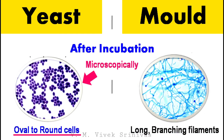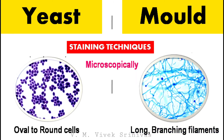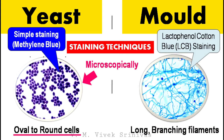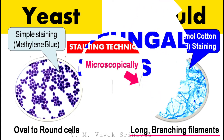Microscopically, yeast appears as oval to round-shaped cells under the microscope, while molds appear as long branching filaments and hyphae. Staining techniques: yeasts are stained by simple staining technique using methylene blue stain, but molds are stained and mounted on lactophenol cotton blue, that is LCB stain.